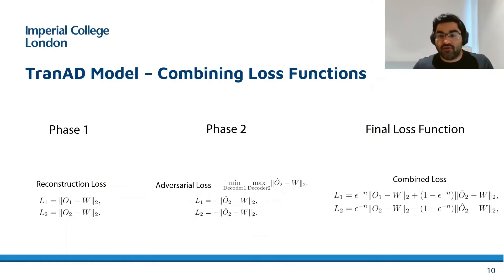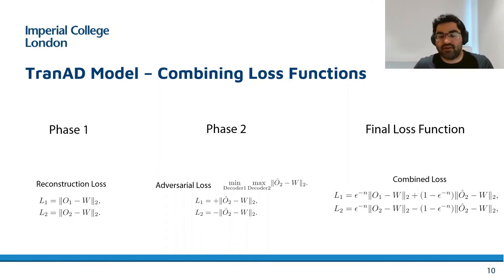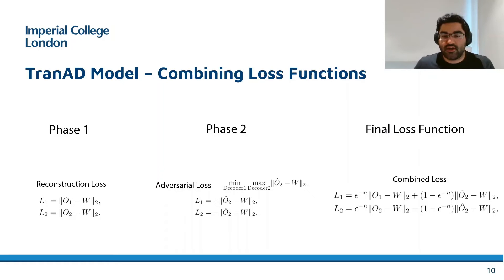We need to determine the cumulative loss, where the evolutionary loss function combines the loss of the two phases, where n is the training epoch and epsilon is a decay parameter. This initially gives a higher weight to reconstruction and eventually weighs the adversarial loss higher.